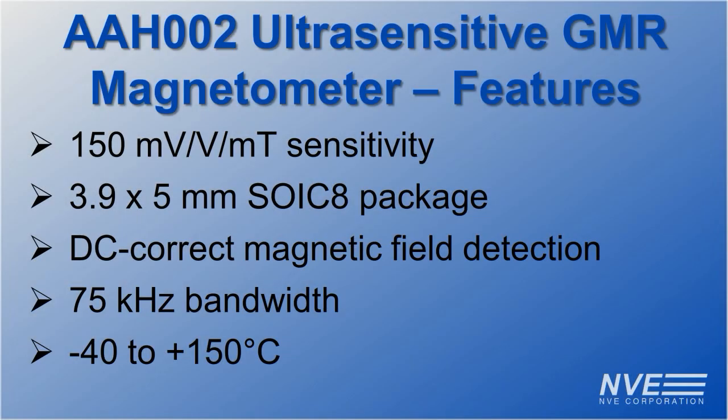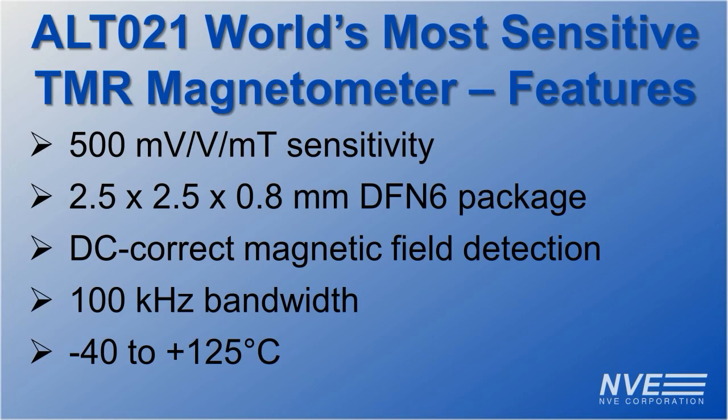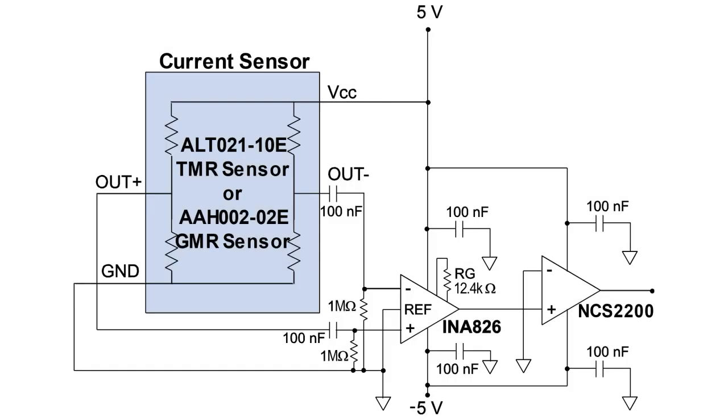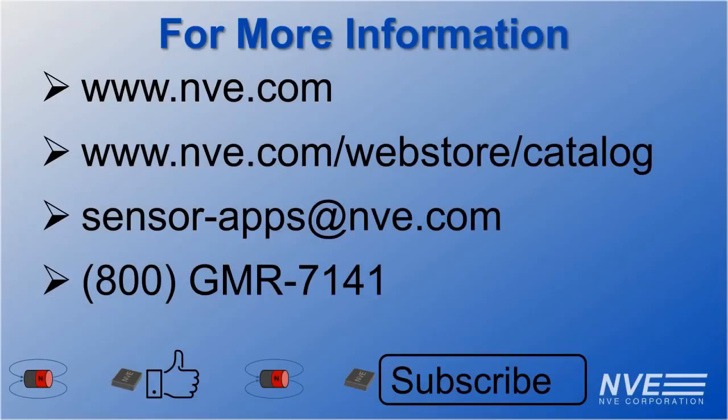NVE's GMR and TMR magnetometers are among the most sensitive magnetic sensors in the world and unlike bulky inductive sensors, they are ultra miniature and inherently DC correct. We demonstrated AC coupling our sensors here, but stay tuned for our next video where we demonstrate a DC correct GFCI.